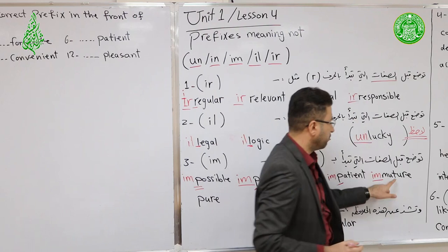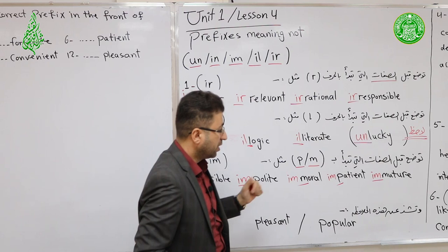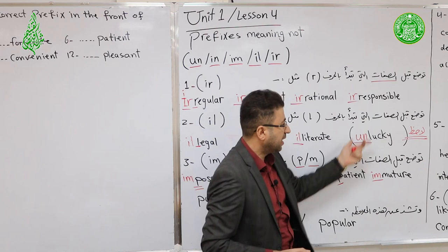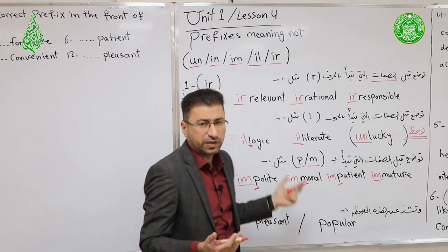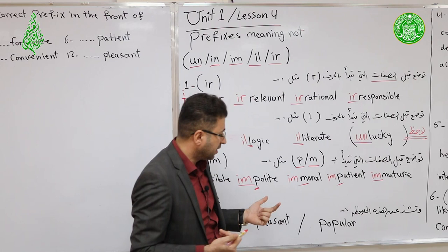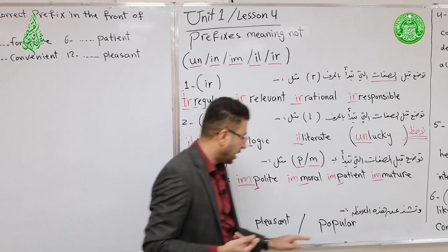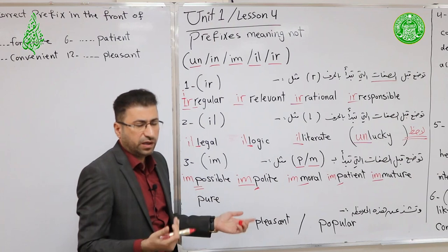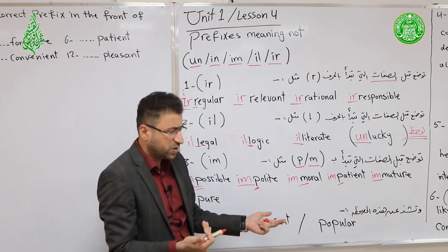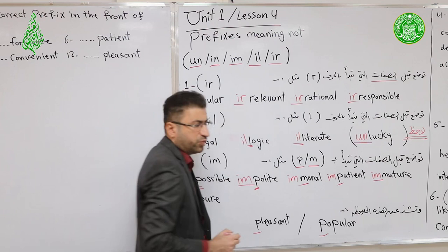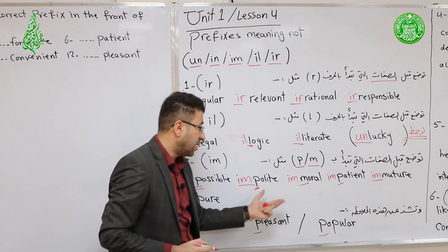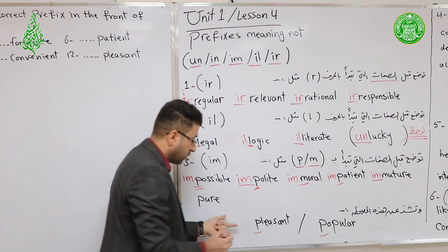Mature → Immature (starts with M). However, there are two exceptions to this note. In English, these vocabulary items don't always follow a fixed rule — memorization is needed. The two exceptions are: Pleasant (مسرور) and Popular (مشهور). Both start with P, but we cannot add IM to them — Impleasant and Impopular are wrong.